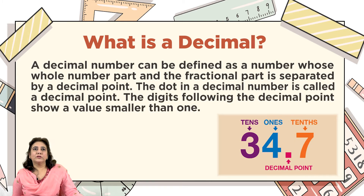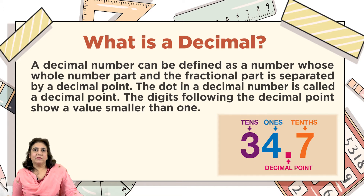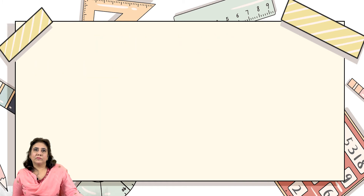What is a decimal? A decimal number can be defined as a number whose whole number part and fractional part is separated by a decimal point. The dot in a decimal number is called a decimal point. The digits following the decimal point show a value smaller than one — for example, 34.7.